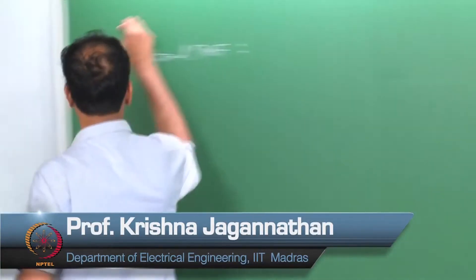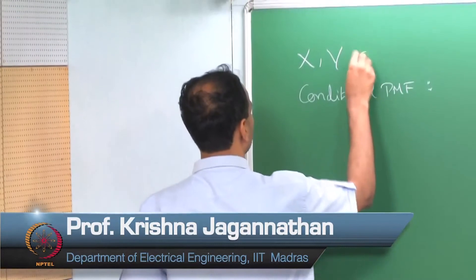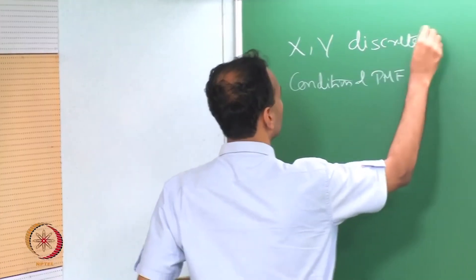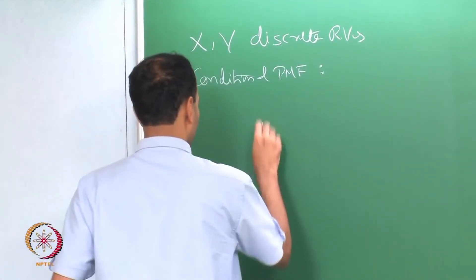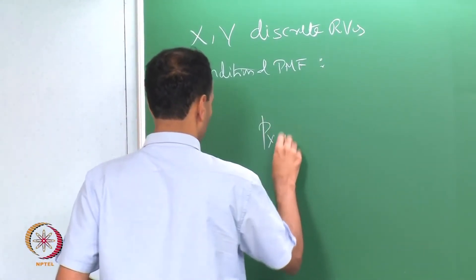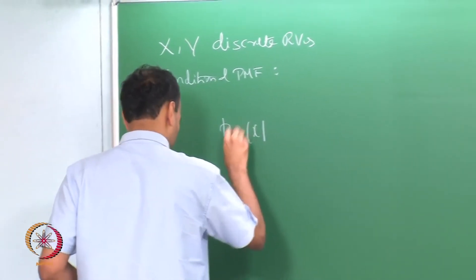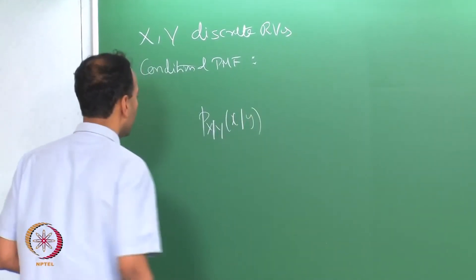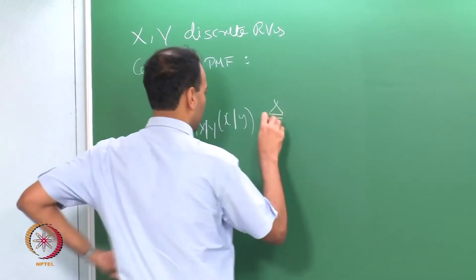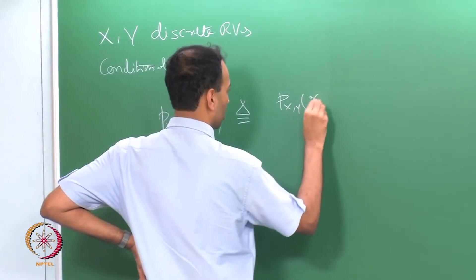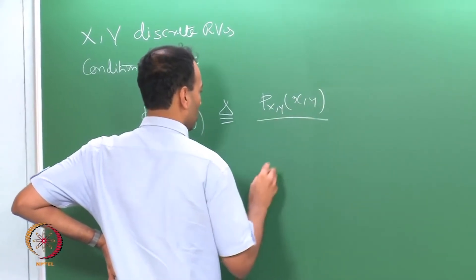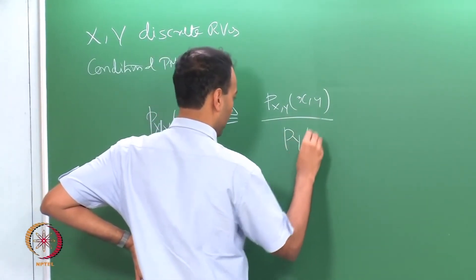Welcome back. So, we were discussing conditional PMF. We said if x and y are discrete random variables, the conditional PMF p_{X|Y}(x|y) is defined as p_{X,Y}(x, y) over p_Y(y).